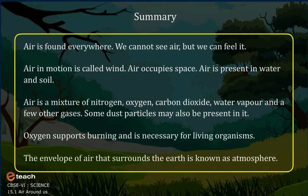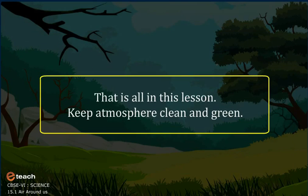Air in Summary. Air is found everywhere. We cannot see air but we can feel it. Air in motion is called wind. Air occupies space. Air is present in water and soil. Air is a mixture of nitrogen, oxygen, carbon dioxide, water vapor, and few other gases. Some dust particles may also be present in it. Oxygen supports burning and is necessary for living organisms. The envelope of air that surrounds the earth is known as atmosphere. That is all in this lesson. Keep atmosphere clean and green.